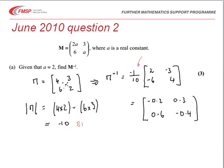Then there's a method mark, and an A mark for doing the calculation of M inverse correctly there. So the three marks in total for that part of the question.